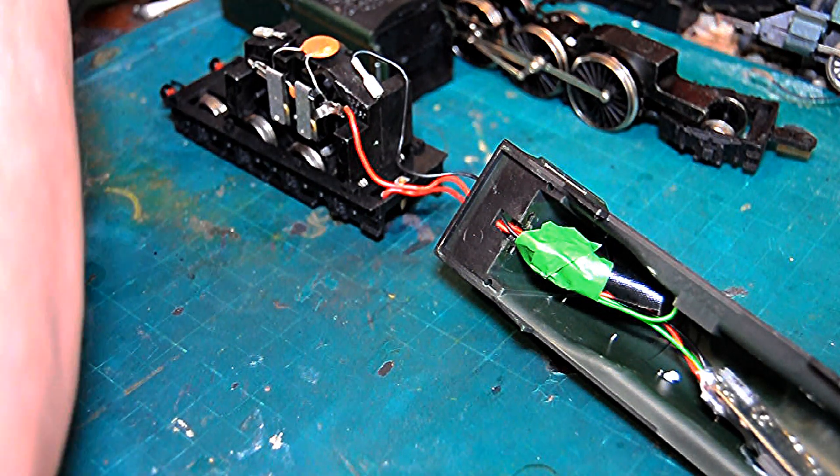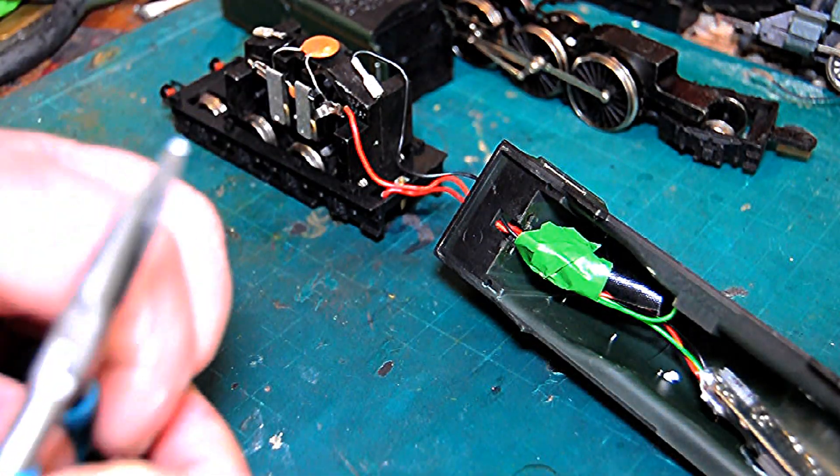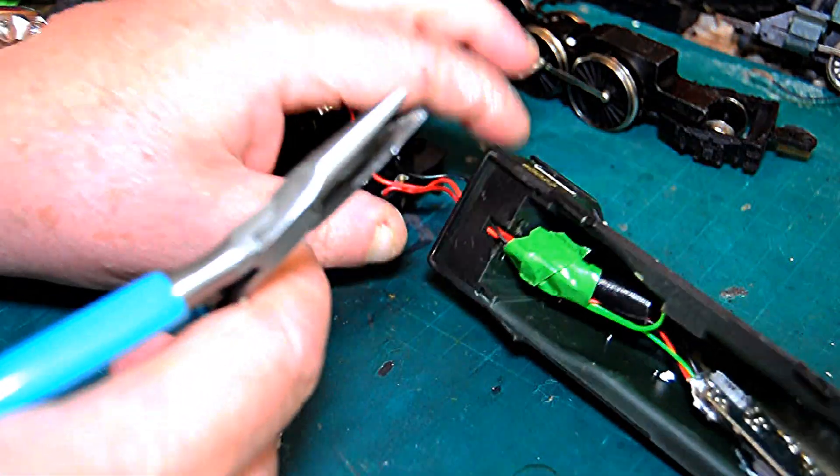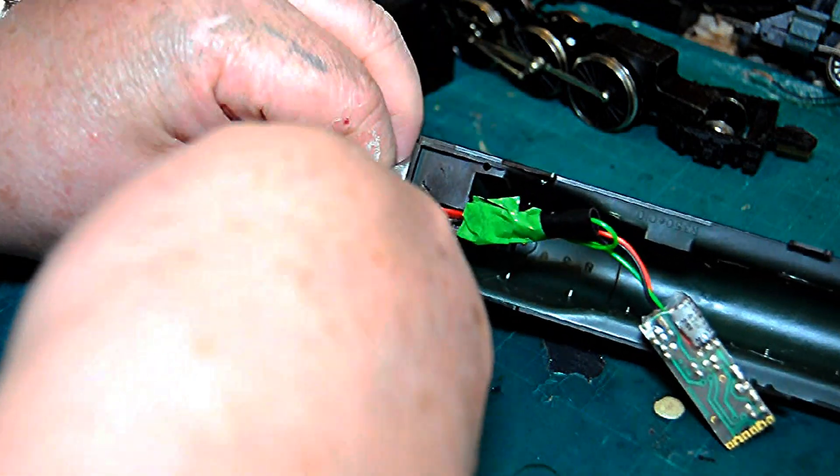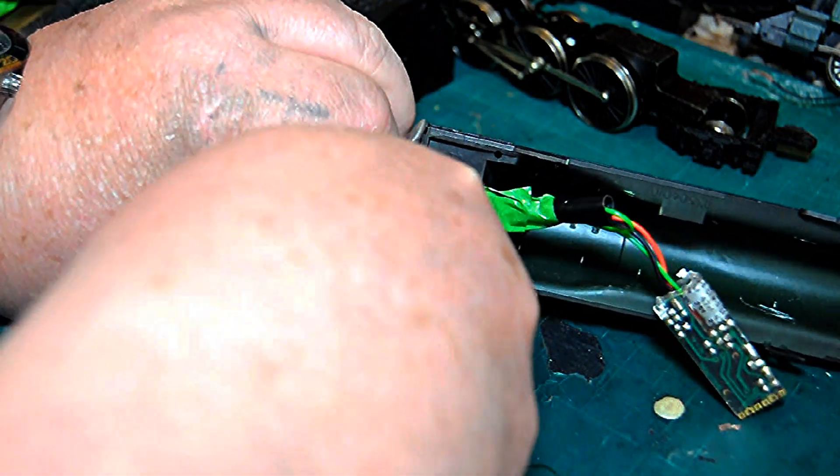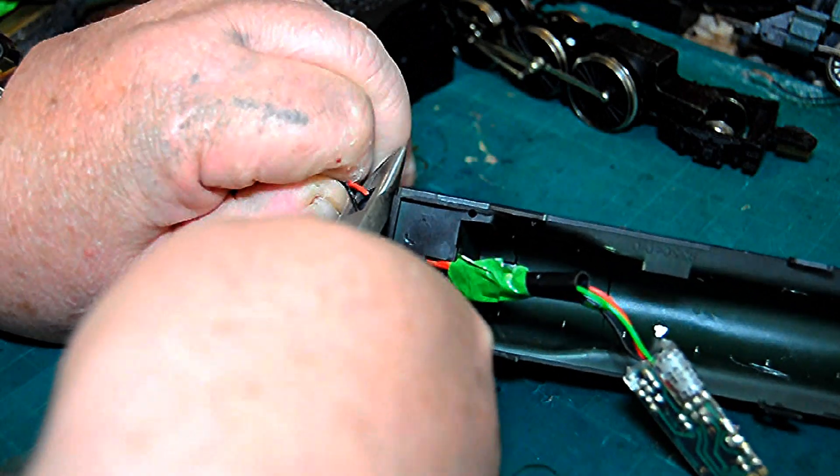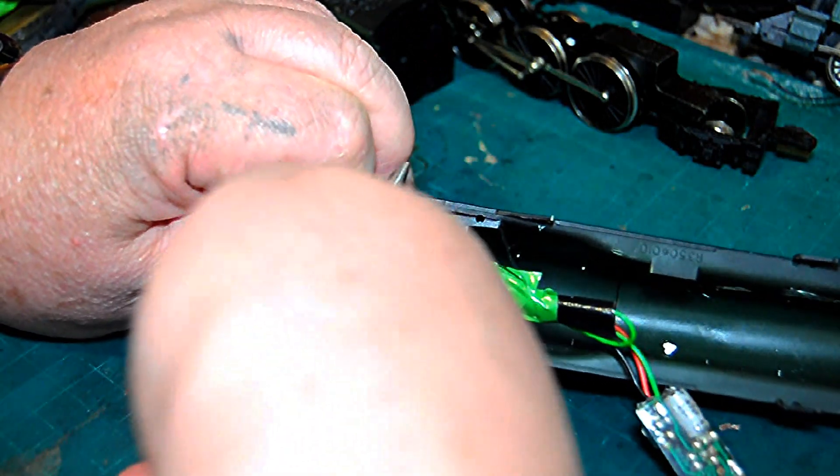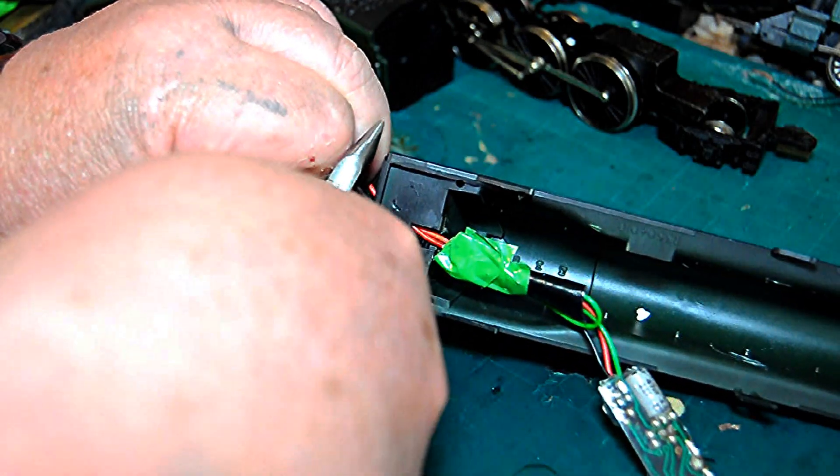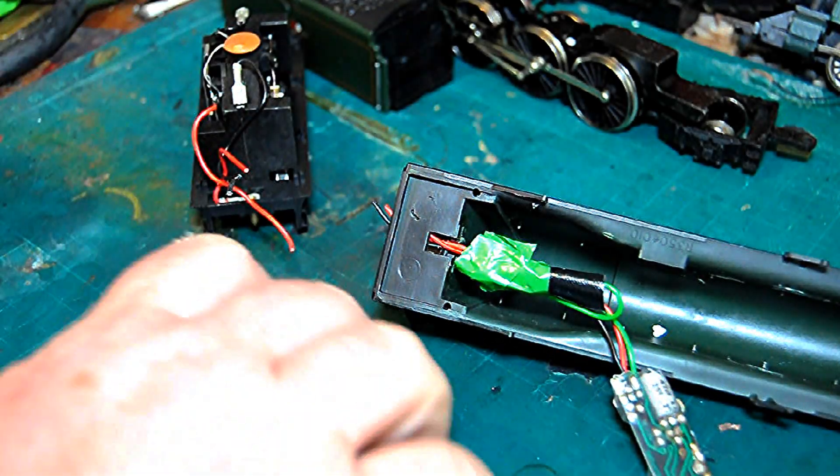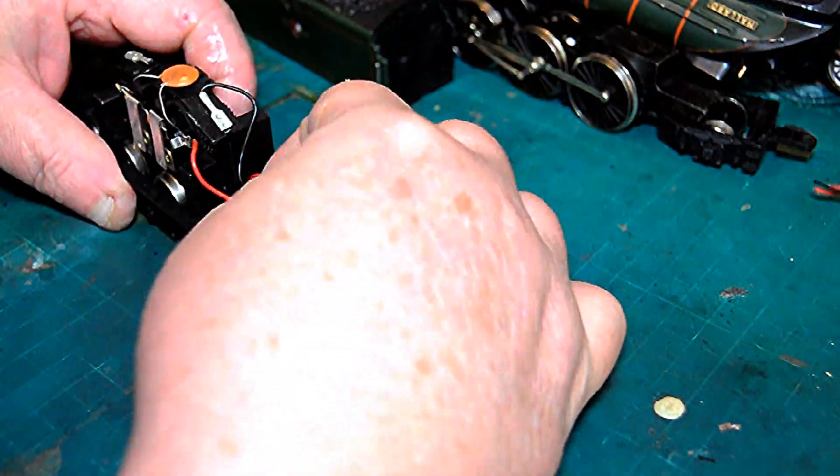It also had another fault - the motor had been pushed up into the tender. Somebody had put weight on it. Anyway, cut the chip off and rewire it how it should be for DC. If I decide to do my layout DCC, I've probably put a sound chip in it. But that 0-1, unless anybody wants it, is no use or an ornament to me.